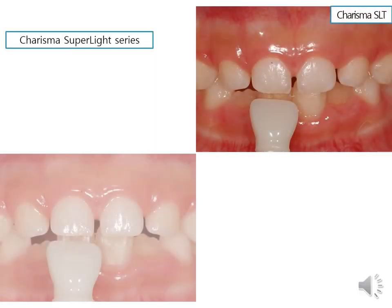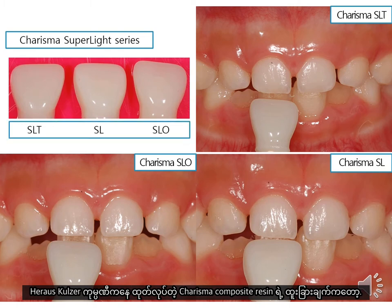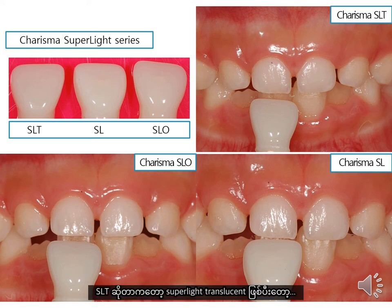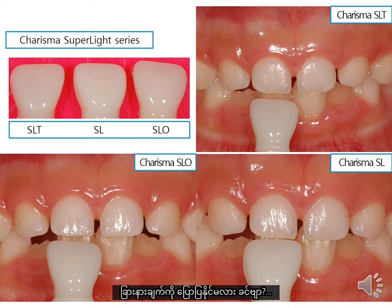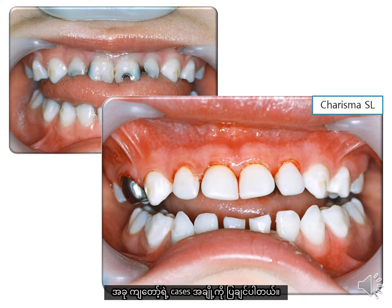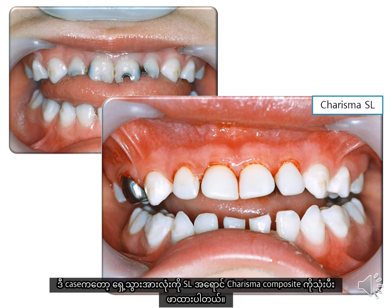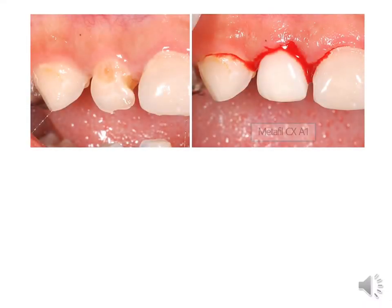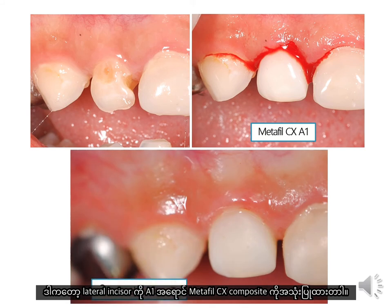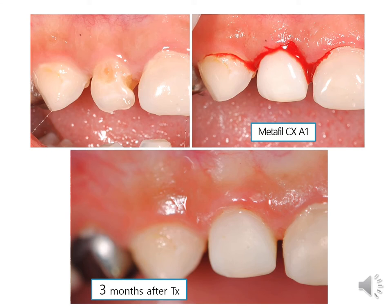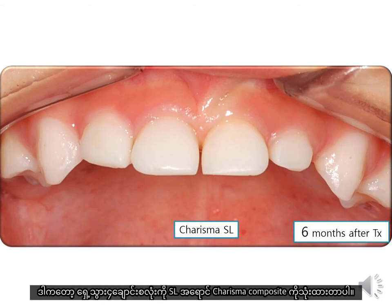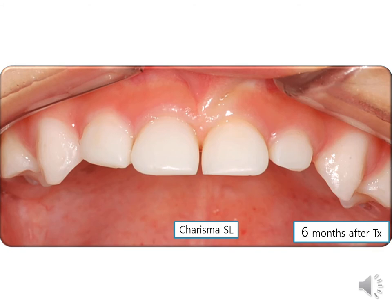Heraeus Kulzer Company provided Charisma composite resins with peculiar shade names: SL stands for super light, SLT stands for super light translucent, and SLO stands for super light opaque. I restored anterior teeth using SL shade of Charisma composite, and a lateral incisor with A1 shade of Metapero CX composite. This case showed four restorations for anterior incisors using SL shade of Charisma composite six months after treatment.